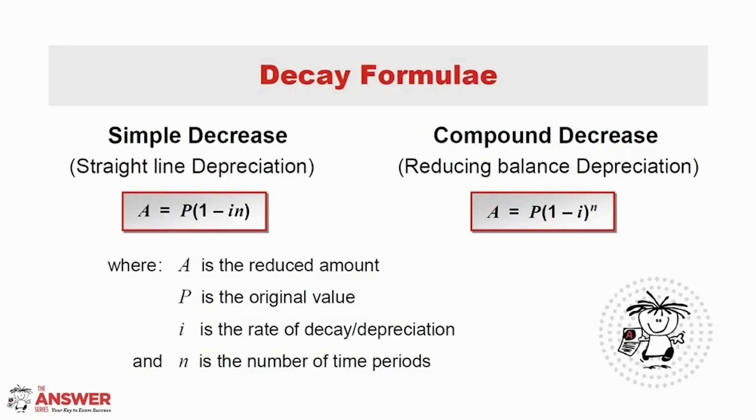There are also two formulae for decay, simple decrease and compound decrease. The big difference with these compared to our increase formulae is that they have subtraction signs as opposed to addition signs. Again, we have our four variables that represent the same for each formula. This time A represents the reduced amount over time as the value of something decreases or depreciates. And I is the rate of decay or the rate of depreciation. P is still the original or principal value. And N is the number of time periods. Some important terminology knowledge is that simple decrease can also be referred to as straight line depreciation. And that compound decrease can be referred to as reducing balance depreciation.